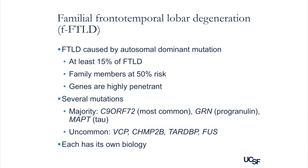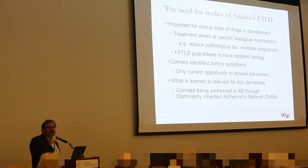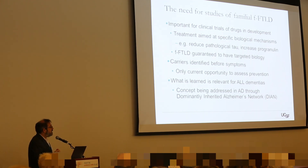There are actually several different kinds of mutations. The most common is caused by the C9-ORF72 mutation, and there are some less common mutations. Different families are affected by different mutations. The point is that each of these mutations has its own biology - if you have a mutation in one kind of gene, you're getting the same disease from a specific biological reason, and if you have a different mutation, the biology is slightly different.